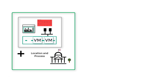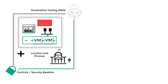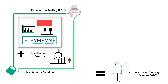Hardware, software, process, and location — all four of those variables combined, along with their security controls and security baseline, as well as penetration testing, equals an approved security baseline, or what the U.S. federal government calls an Authority to Operate. This is the ultimate objective for an agency. Whether or not you're in the federal government, it still applies.